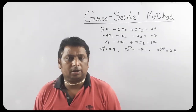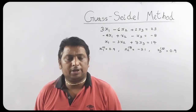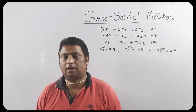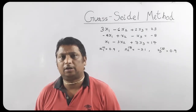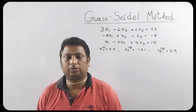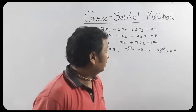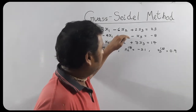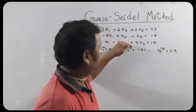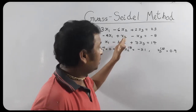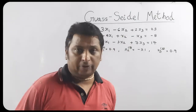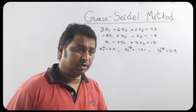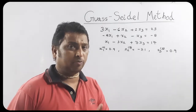This is the second part of the Gauss-Seidel method. Here I will explain. First, see this question which is given is not in diagonally dominant form. So it means we have to convert this one into diagonally dominant form.